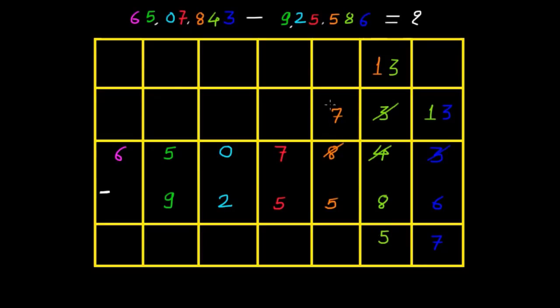Now 7 is a bigger number than 5, so 7 minus 5 is 2. I will write 2 here.